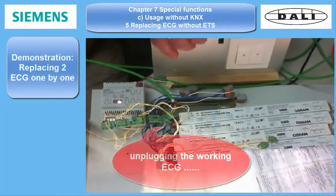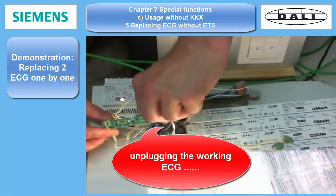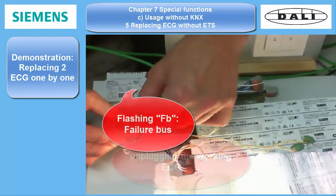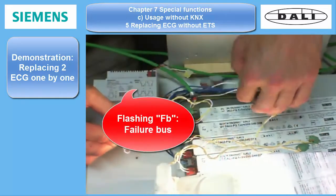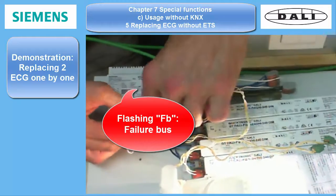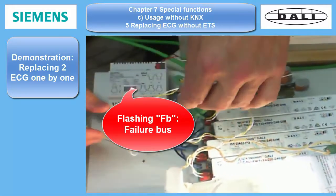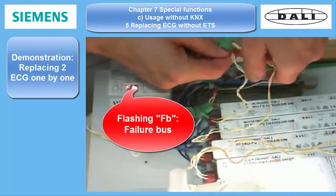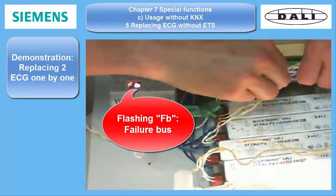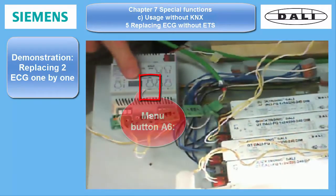Now I simulate the dropout of both ECG by unplugging them from the DALI bus. Watch the front side display of the DALI Gateway. It changes from B, bus active, to FB, failure bus, signaling that something is wrong.